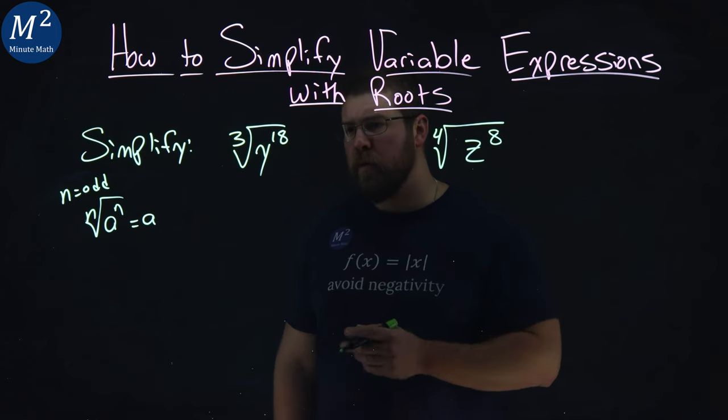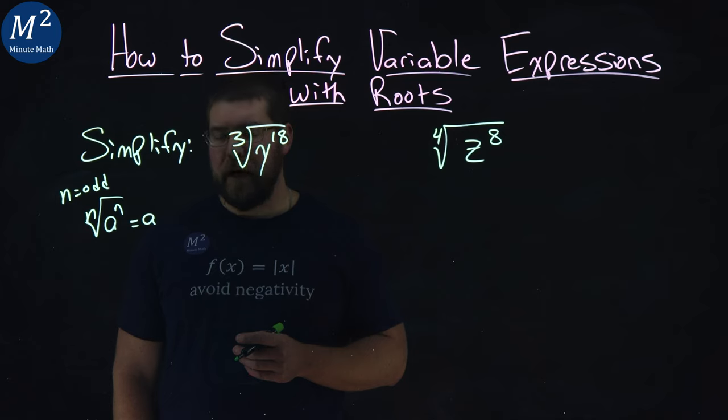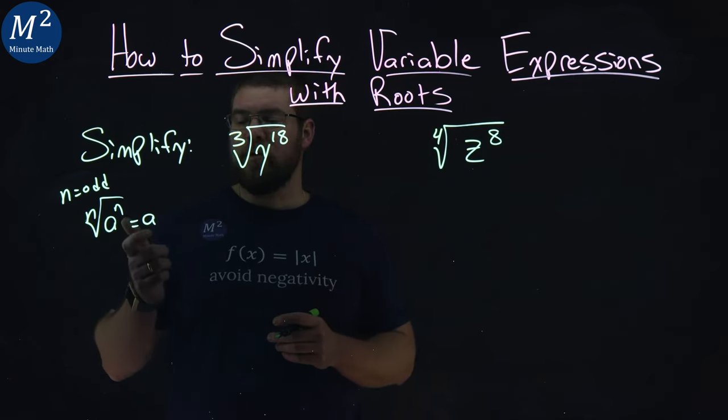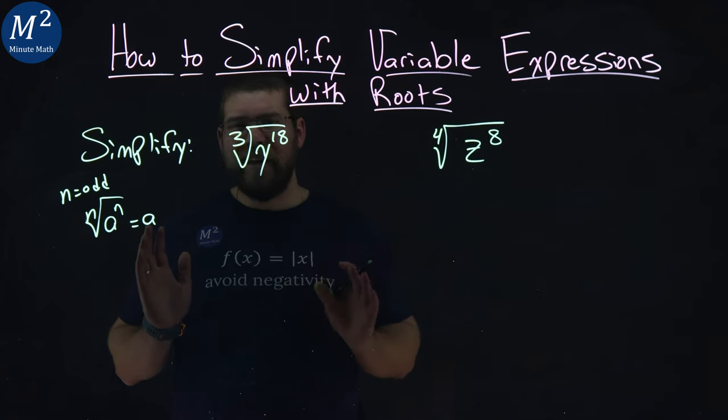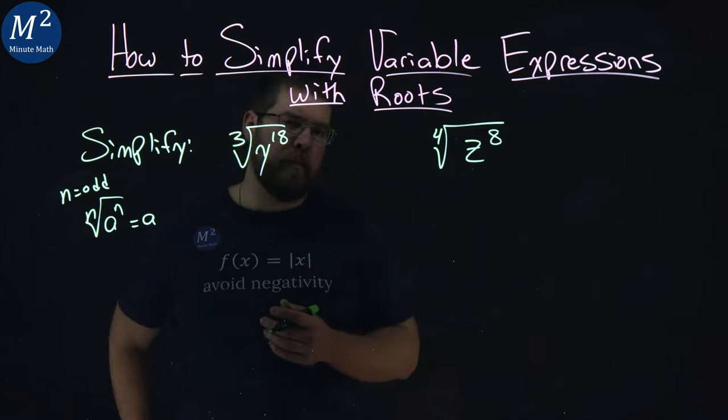Let's go with our first one right here, the third root of y to the 18th power. Notice it's an odd root here, so we don't have to worry about absolute values because we know we can take the odd root of a negative number.